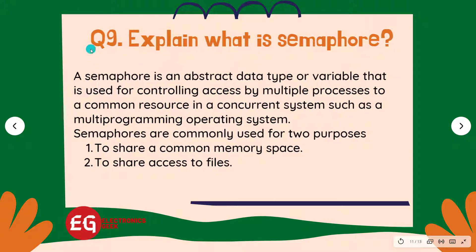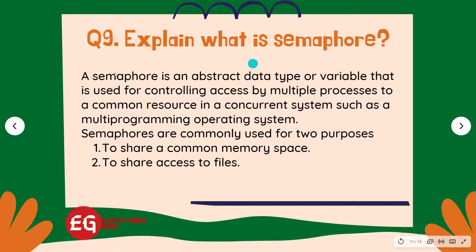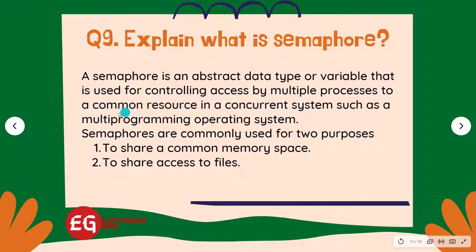Question 9: Explain what is a semaphore? Answer: A semaphore is an abstract data type or variable that is used for controlling access by multiple processes to a common resource in a concurrent system, such as a multiprogramming operating system. Semaphores are commonly used for two purposes: 1. To share a common memory space; 2. To share access to files.